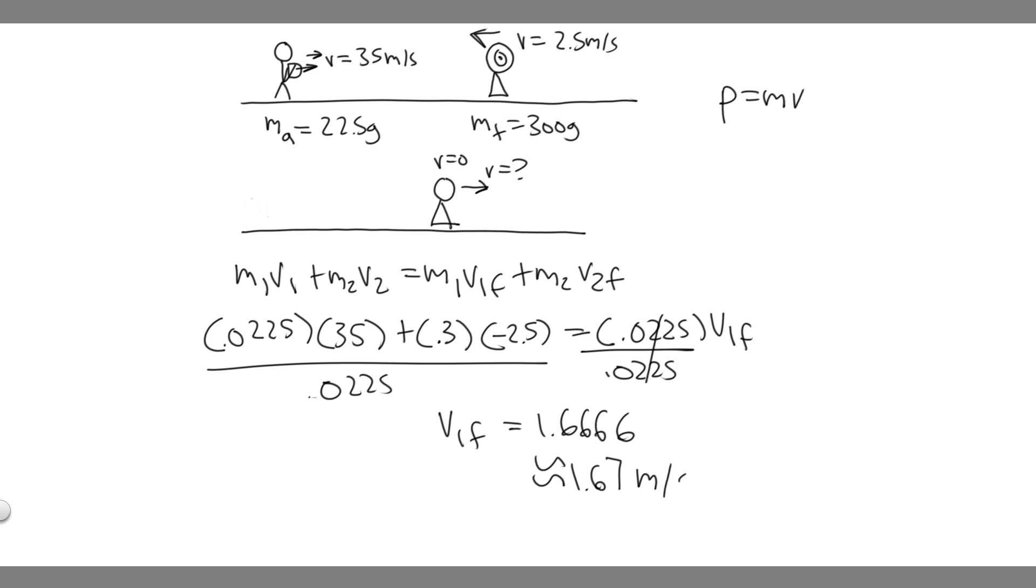It's going to be meters per second because it's velocity, so keep in mind this is going to be the velocity of the arrow after it went through the target. So 1.67 meters per second, that's going to be your answer to this problem and hopefully you found this useful.